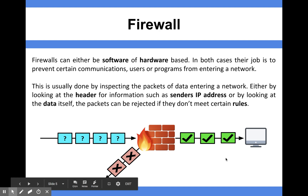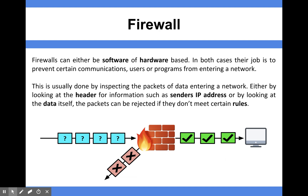A firewall is a type of network security that can be both hardware and software. The whole purpose of a firewall is to prevent communication from users or programs that enter a network that shouldn't be entering a network. It could be like a nasty piece of programming code in the form of a virus that's made its way into a computer system.